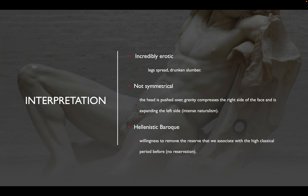Our last point of interest talks about scholarly interpretation. The first note is that the sculpture is incredibly erotic — you can see this by his legs being spread and him being in a drunken slumber, revealing his genitalia. We also note that it's not very symmetrical: the head is pushed over, gravity compressing the right side of his face and expanding to the left side. We call this intense naturalism.